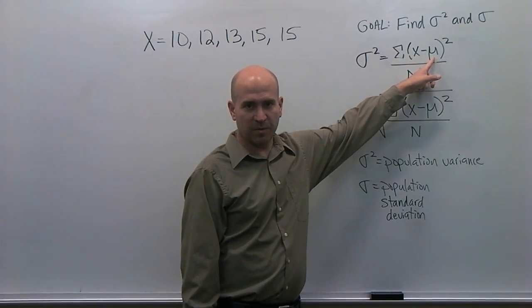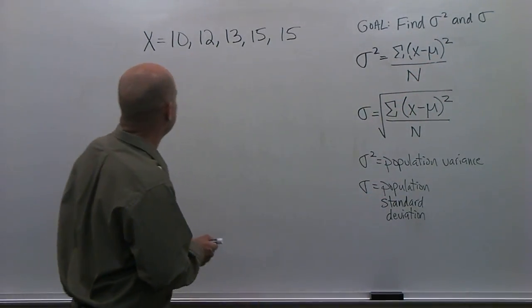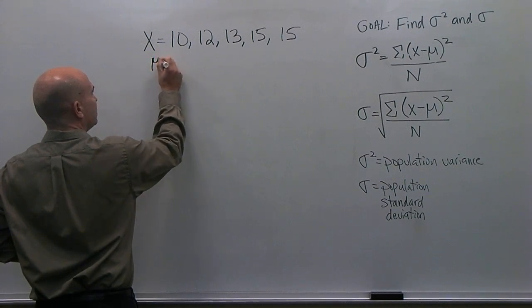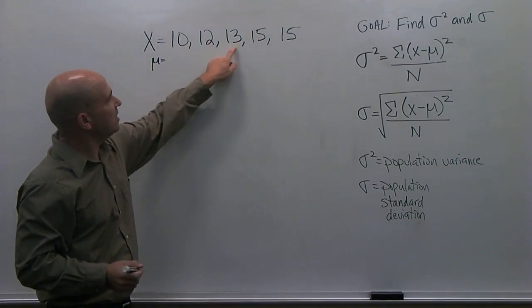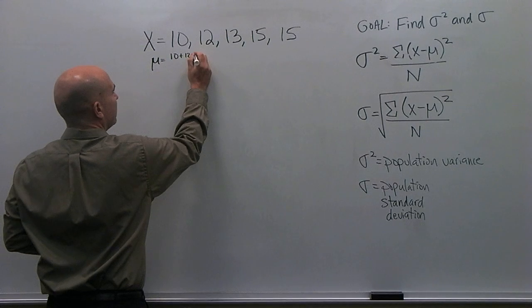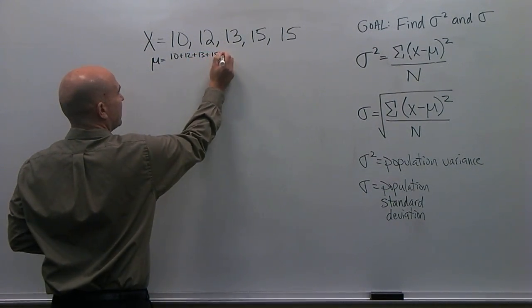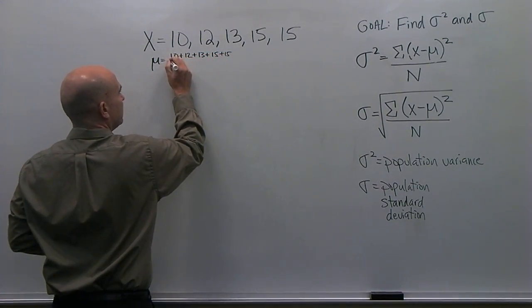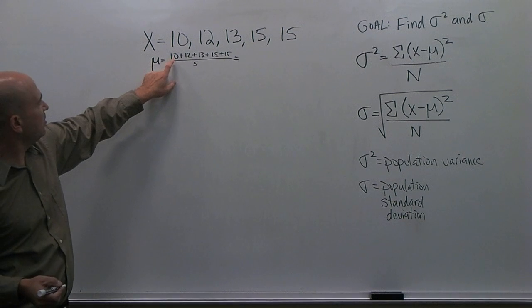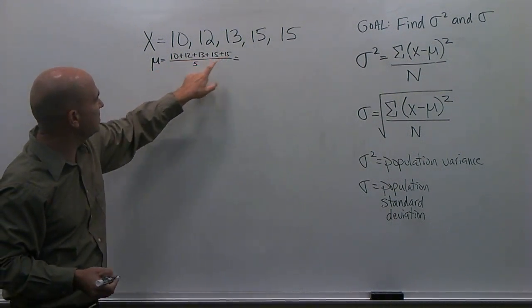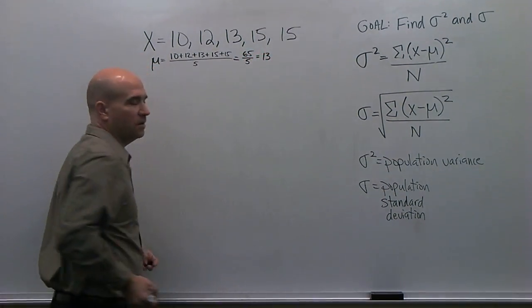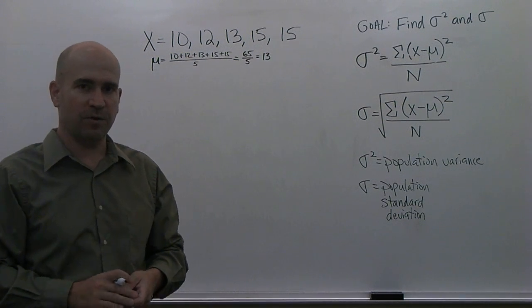The one thing we don't know here is μ, the population mean. So let's start by solving for that. The population mean is equal to the sum of all of these values divided by the number of values, or 5. So if we add these up and divide by 5, this is going to be equal to 22, 35, 50, 65, over 5, or 13. So the population mean is equal to 13.